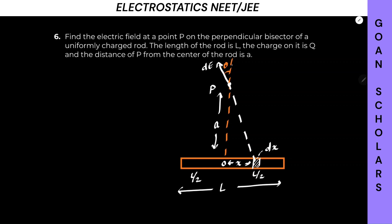The component of dE along this line will be dE cos theta. Now, dE has a cos theta component and a dE sin theta component. But if you imagine a small length element on the left-hand side, all the dE sin thetas will cancel out, while all the cos thetas will add up. So the resultant electric field will be the integral of dE cos theta.